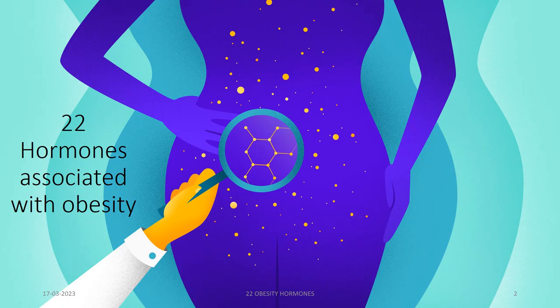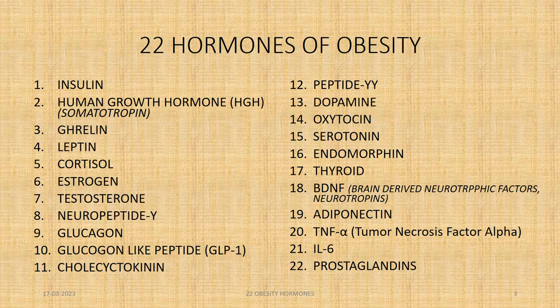Out of 50, 22 hormones are directly or indirectly associated with obesity. This is the list of those 22 hormones, and unless we understand these hormones — each of these — we cannot really grasp how to control or how to reverse obesity.